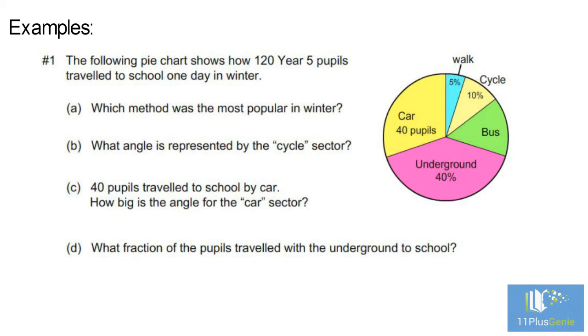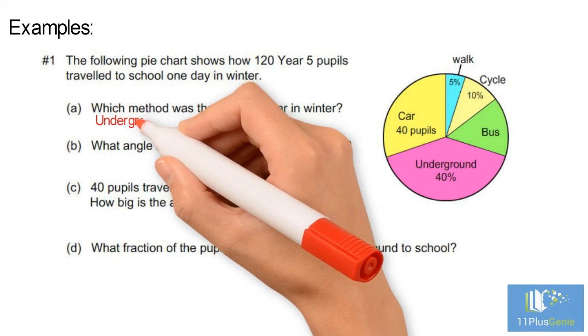Examples. Number one. The following pie chart shows how 120 Year 5 pupils travel to school one day in winter. A. Which method of travel was the most popular in winter? The sector for the underground is the biggest. So the most popular way of travelling to school was the underground.